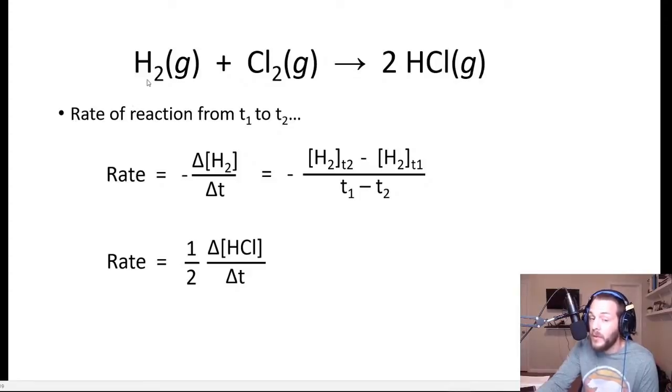So in order to have a single rate for the entire reaction, we make sure we take stoichiometry into account. And so we divide by the coefficient or multiply by the inverse of that coefficient.